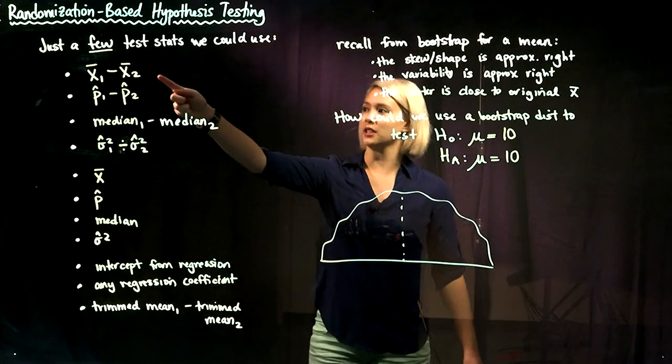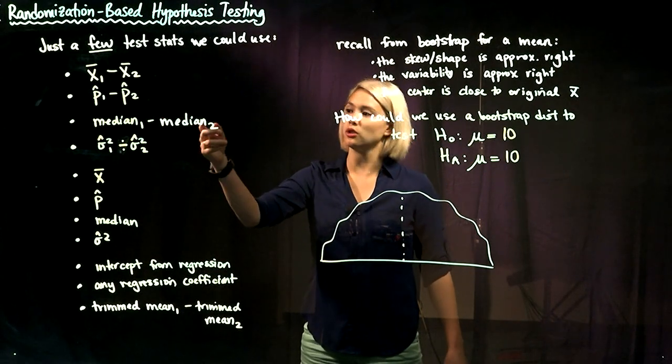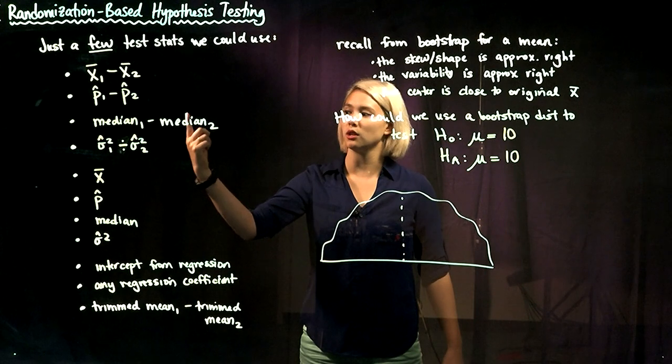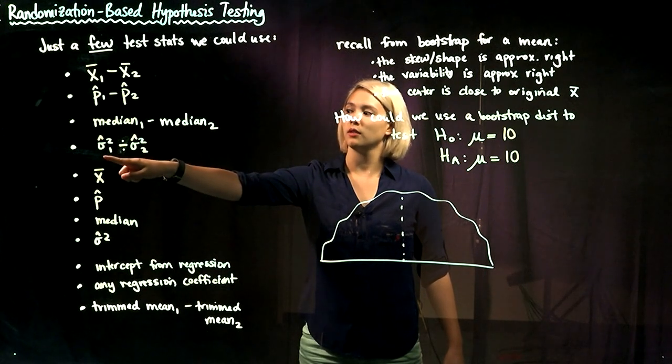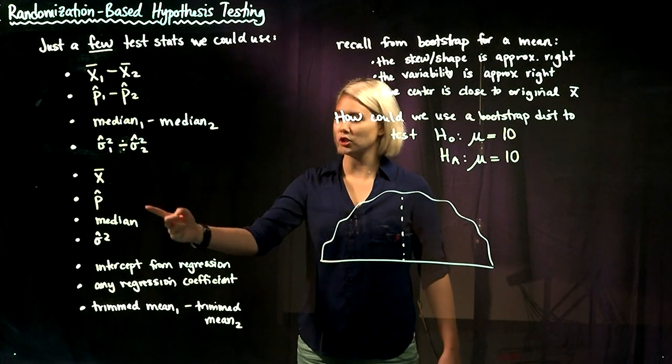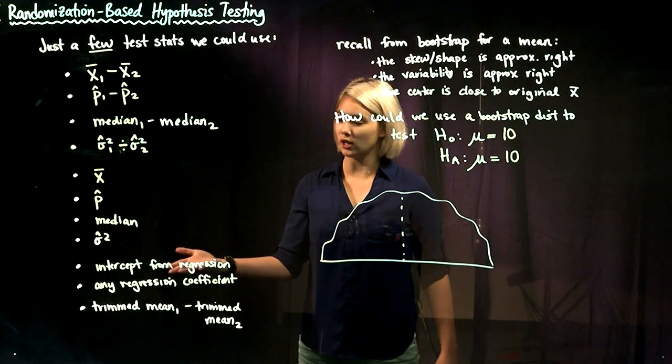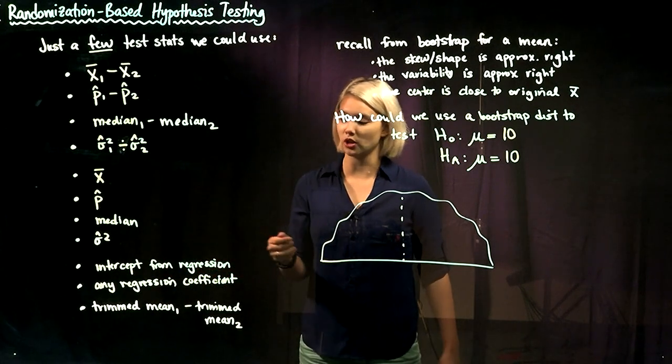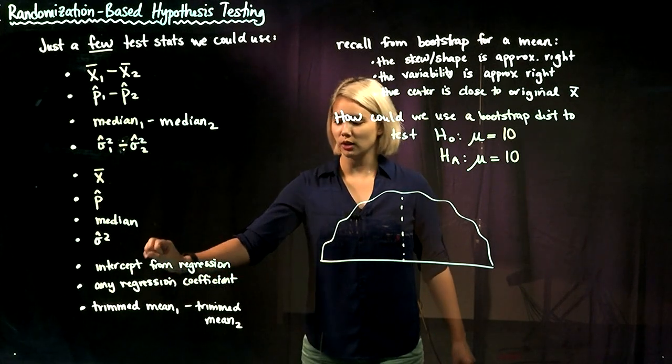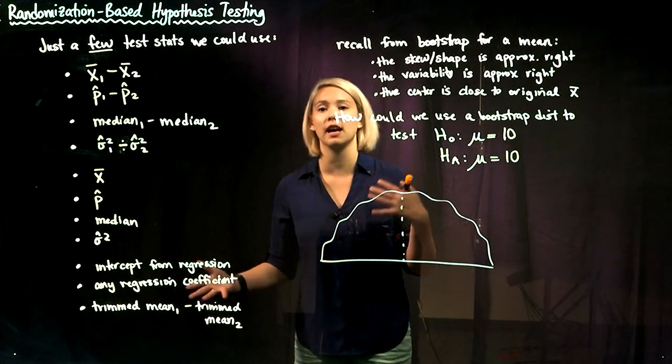We talked about a difference in means and a difference in proportions for two groups. We could also easily do a difference in medians, one sample variance divided by another sample variance, a single mean, a single proportion, a single median, a single variance. We could use regression and use any regression coefficient. We could use a trimmed mean for one group minus a trimmed mean for another group. The list goes on and on.